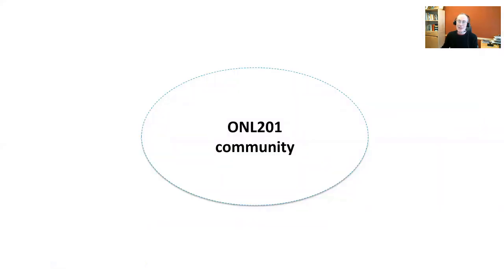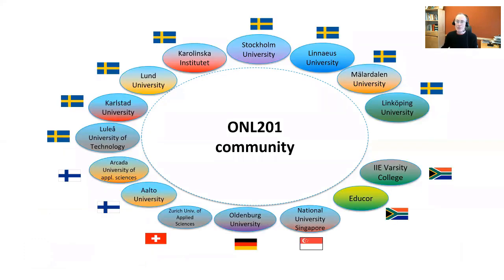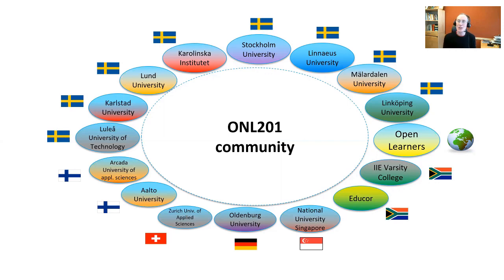The ONL community consists of you — the learners — and the course team. On most courses there are between 100 and 130 participants, coming from a wide range of institutions. The partner universities involved this time include many from Sweden, but also from Finland, Switzerland, Germany, Singapore and South Africa. Added to that mix, we have our open learners, who sign up via social media and word of mouth. They come from all sorts of countries and institutions and provide extra variety and diversity. About 20 to 30 open learners join each course.